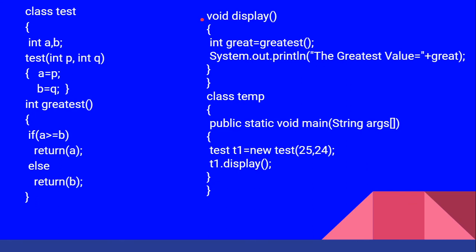There is one more method called display — void display. Inside display, the statement is: int great = greatest(). Here, greatest is a function call within the display function. So the display method calls the greatest method — this is an example of nesting of methods. Then system.out.println prints 'the greatest value is' plus great. So the test class has three methods: test, greatest, and display, and inside display the greatest method is called.